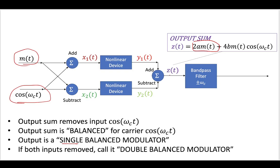Were we to come up with some kind of device where this output sum did not contain this term, we could consider it to be a double balanced modulator.